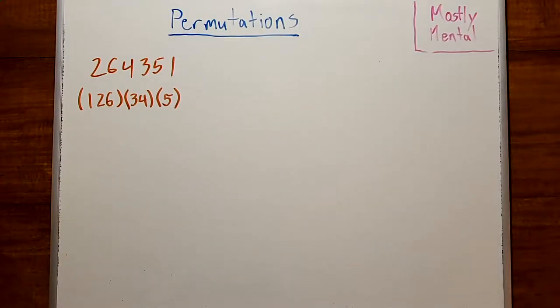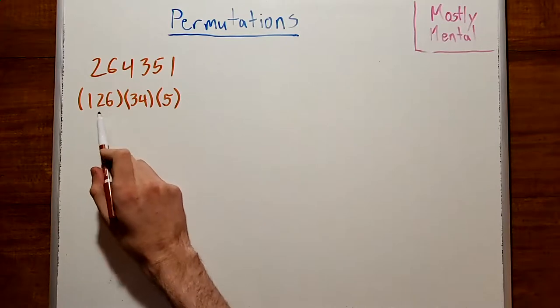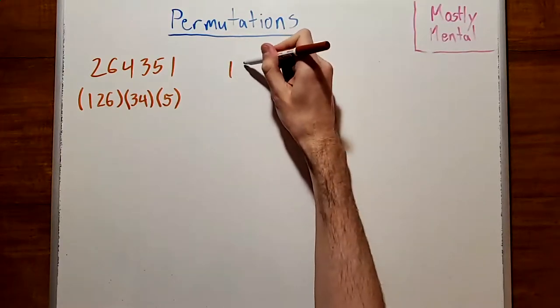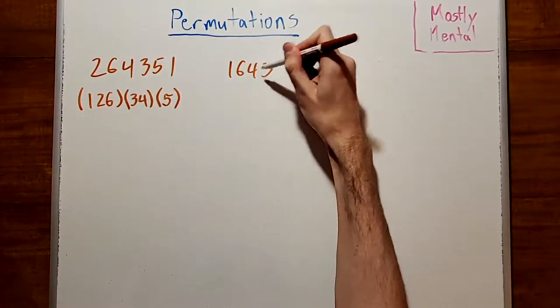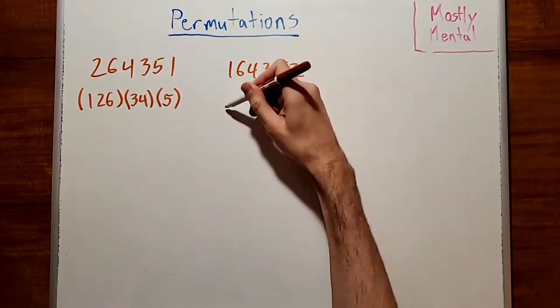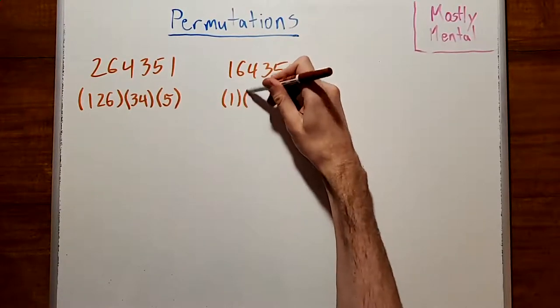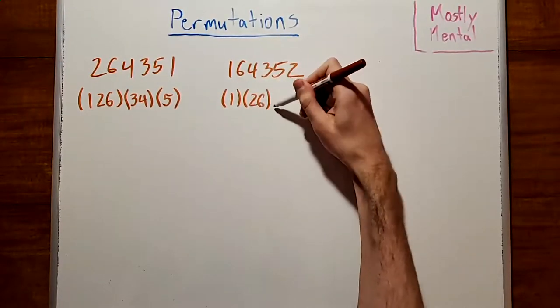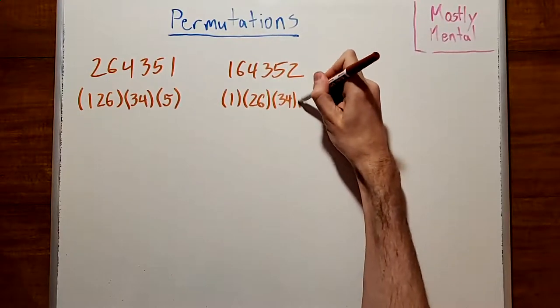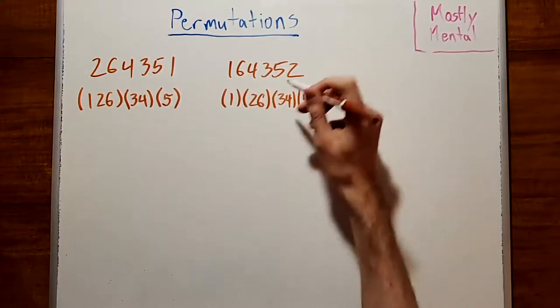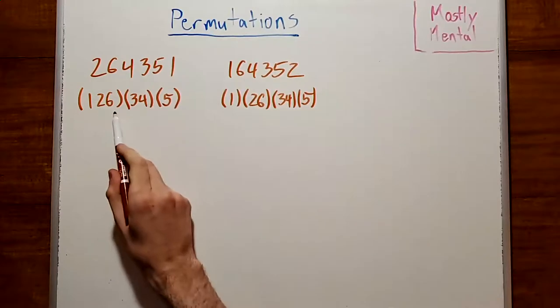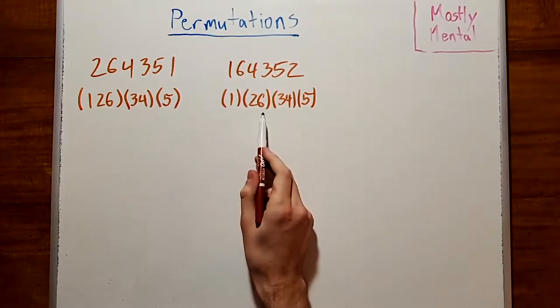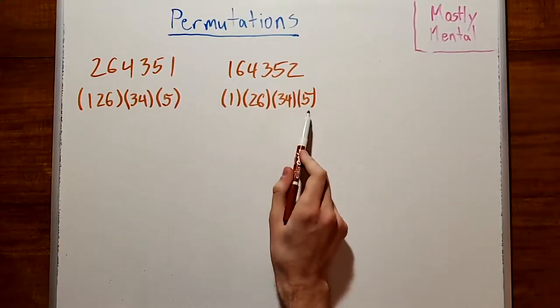What happens if we swap the positions of two of the elements? Well, if they're in the same cycle like 1 and 2, we get 1, 6, 4, 3, 5, 2, which has cycle representation (1)(2, 6)(3, 4)(5). And notice that we've taken this cycle and broken it into 2, and left all of the other cycles unchanged.